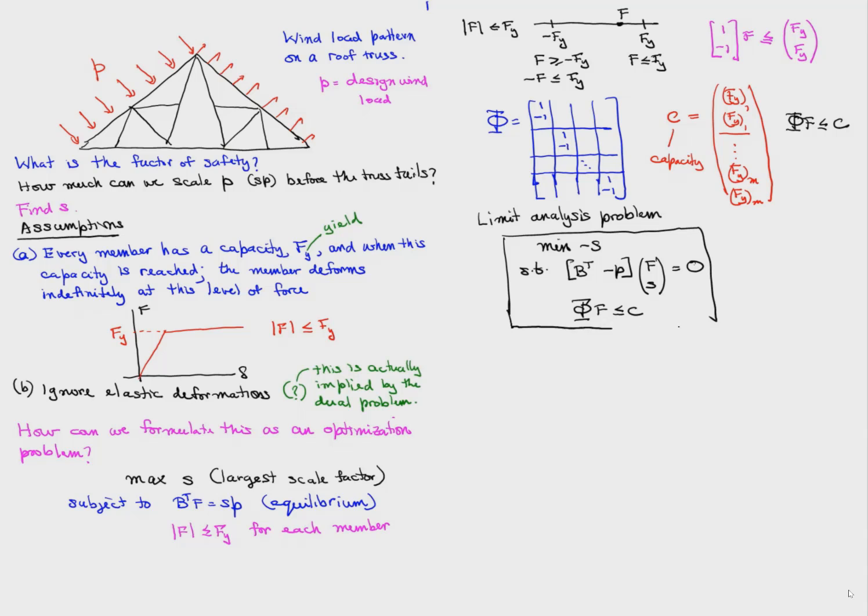So now maximize S can be written as minimize minus S, and then B transpose F equals SP can be rewritten in that way, and then we have the capacity constraint. We realize that this is a linear program, and the decision variable consists of F and S.